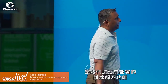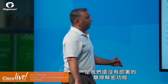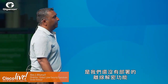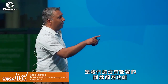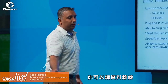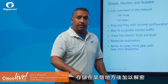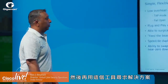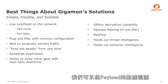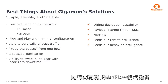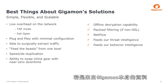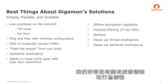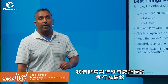A couple of other capabilities not yet fully deployed include offline decryption: you can take traffic offline, store it, decrypt it, and then look for scenarios within that traffic. They could also do payload filtering and NetFlow, and were really looking at threat intelligence and behavior intelligence when it comes to traffic being fed from Gigamon itself.